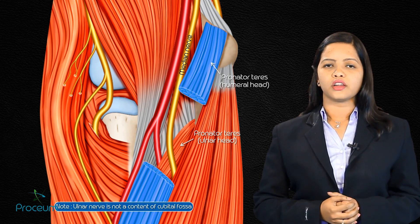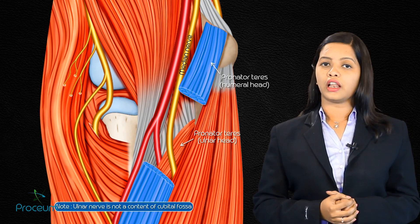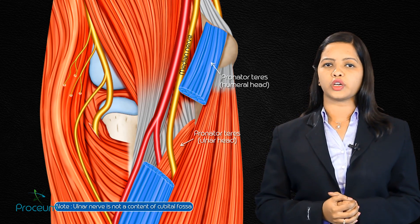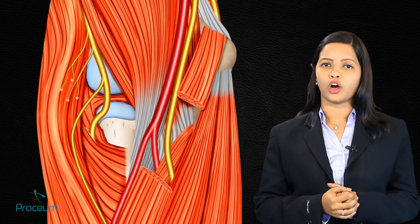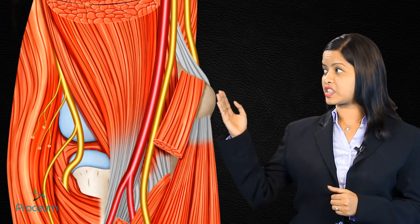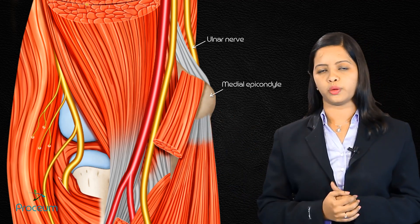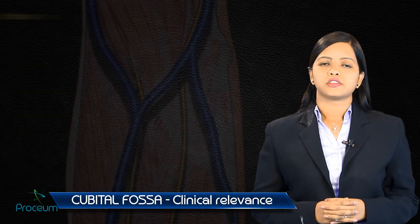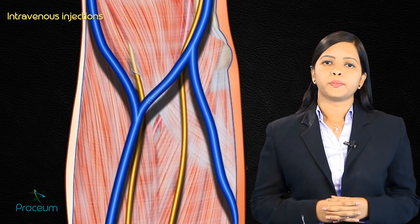An important point to note: the ulnar nerve is not a content of the cubital fossa, because it passes posteriorly to the medial epicondyle of the humerus.